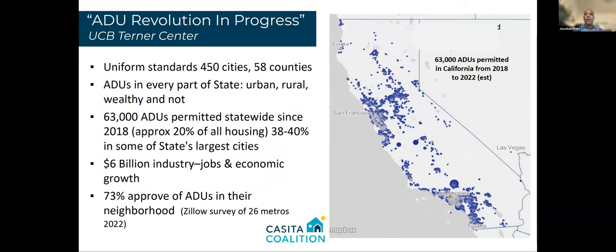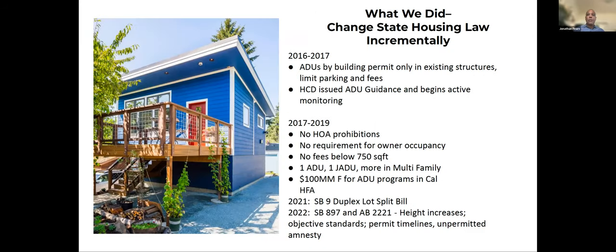Through the laws that have been passed over the last five or six years, ADUs are now in every part of the state — urban, rural, wealthy communities, low-income communities. Over 60,000 have been produced or permitted in the last five years. It is a growing industry — sizable and growing, which is what we wanted to see. People really respond well to ADUs, not only in their own backyards, but in the backyards of their neighbors.